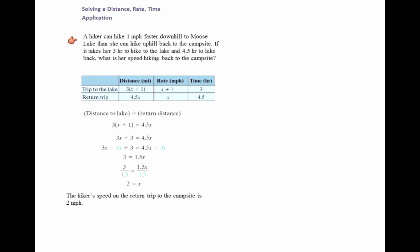This example of solving a distance rate-time application. A hiker can hike 1 mile per hour faster downhill to Moose Lake than she can hike uphill back to the campsite. If it takes her 3 hours to hike to the lake and 4.5 hours to hike back, what is her speed hiking back to the campsite? Let's take a look at the chart again: distance, rate, and time. In this case, we're going to let x equal the return rate. And x plus 1 would be the trip to the lake.